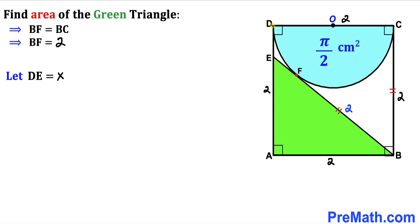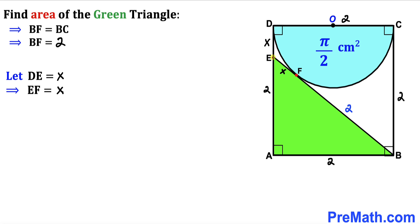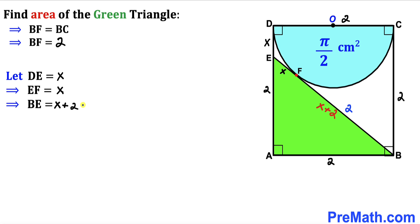Let's assume side length DE is x centimeters. Applying the two-tangent theorem again, tangent segments DE and EF are congruent, so EF = x as well. Therefore the length EB is the sum of EF and BF, giving us EB = x + 2.